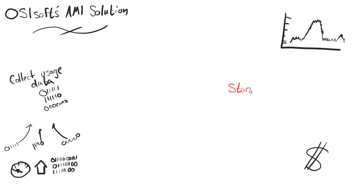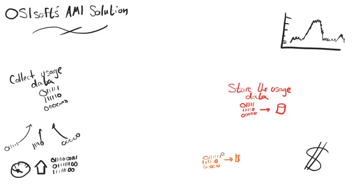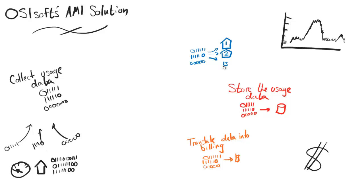Another component that will be needed is storage. We need to take all that usage data and store it away so we can retrieve it at any time — maybe to review a bill or to pull up a history of a tag. Next, we'll need to take that usage data and translate it into a bill, and this is no trivial task. Billing systems require quite a bit of accountability. Also, all this usage data is meaningless if it's not organized — if we can't sort out thousands of data points into which house they came from, it's not helpful.